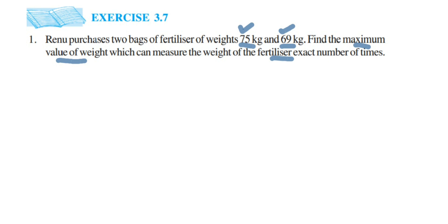Here, 'maximum' means the highest value — that is, the Highest Common Factor. So we have to find the HCF of 75 and 69. Once we get the HCF, that number can divide both 75 and 69 equally, which is what the question is asking. So let us find the HCF. But before that, let us write down what is given.